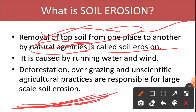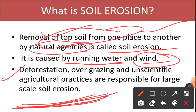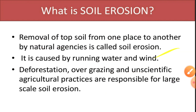Soil erosion is caused by two geomorphic agents: running water and wind, though wind erosion is only perceptible in desertic regions. Running water causes a great extent of soil erosion. Deforestation is another cause — the lack of trees makes the soil loose, easily removed by running water or wind. Over-grazing and unscientific agricultural practices also cause large-scale soil erosion.